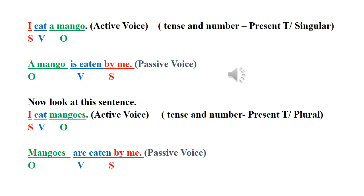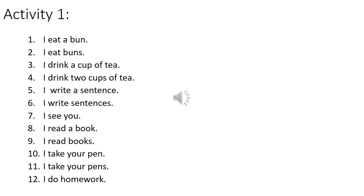I think it is very easy if you look at the way of making these sentences. Now, let's do these activities. Turn these active voice sentences into passive voice. I eat a bun. I eat buns. I drink a cup of tea. I drink two cups of tea. I write a sentence. I write sentences. I see you. I read a book. I read books. I take your pen. I take your pens. I do homework. Turn these sentences into passive voice sentences.